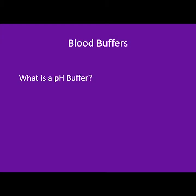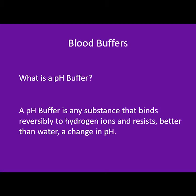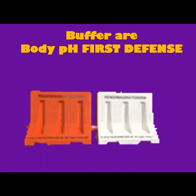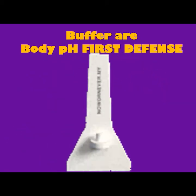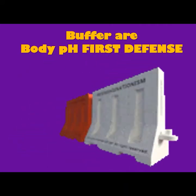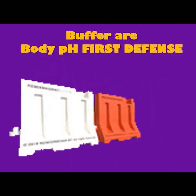pH buffers are crucial for the regulation of body pH. A pH buffer is any substance that can bind in a reversible way to hydrogen ions and resist better than water at changing pH. Buffers are the first defense of the body when something is trying to change body pH.